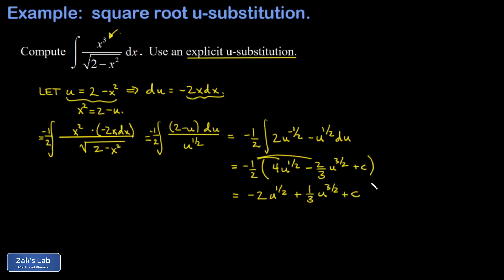And again, I have an arbitrary constant. Now you might complain I just multiplied c by negative 1 half, but it's an arbitrary constant. So when I multiply it by negative 1 half, I just get another arbitrary constant.